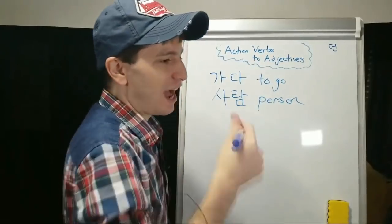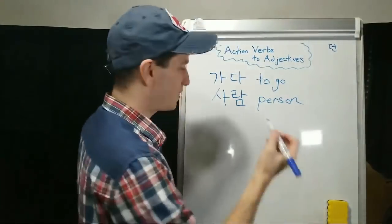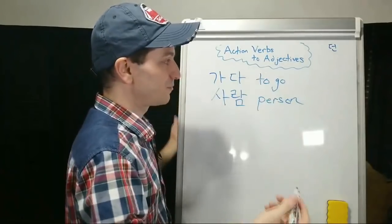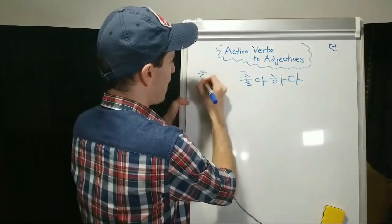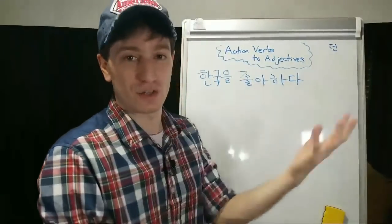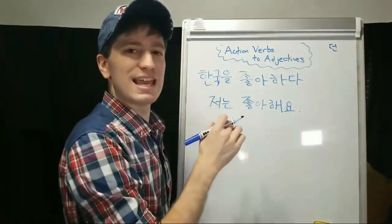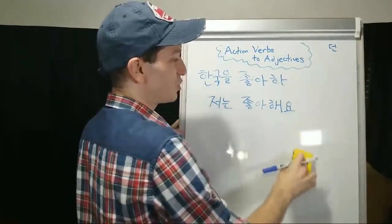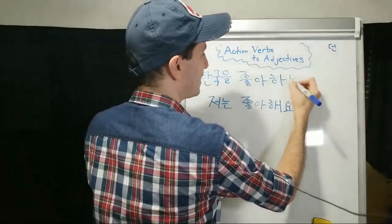I want to make the sentence: I like people who like Korea. We're going to start with to like Korea. The verb for to like is 좋아하다, and Korea is 한국. So we get 한국을 좋아하다 — to like Korea. And then I like is 저는 좋아해요. What we want to say is a person who likes Korea. I'll show you first — you can kind of see an example: 한국을 좋아하는 사람.